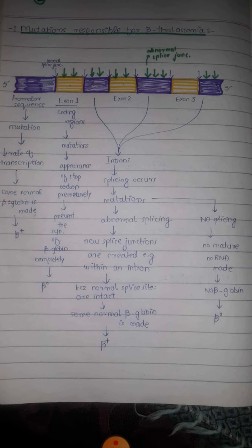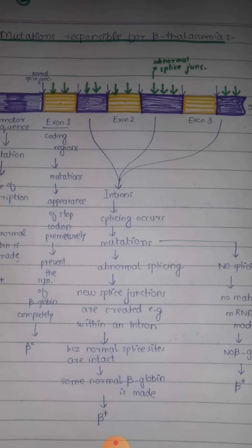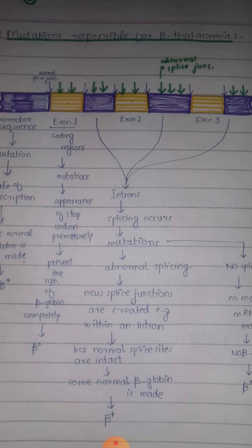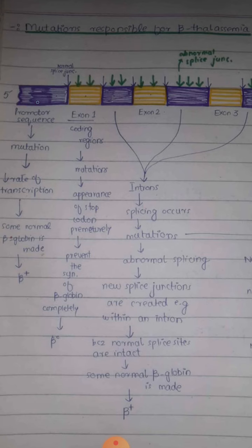The mutations responsible for beta thalassemia include: first, mutations in the promoter sequence, which cause a decrease in the rate of transcription, resulting in decreased formation of beta globin chains — so the person will be beta-plus. Second, mutations in the exons (coding regions) lead to the appearance of a premature stop codon, which prevents synthesis of beta globin chains entirely — so the person will be beta-zero.